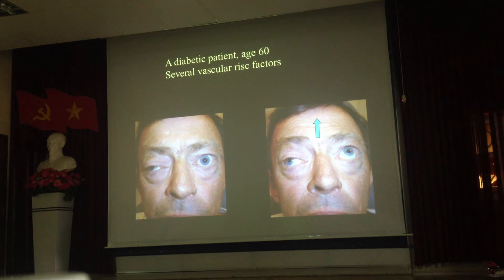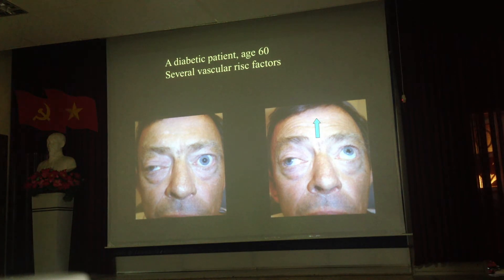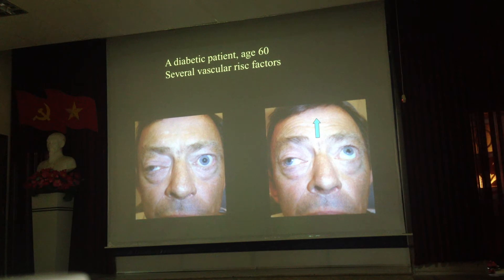How are his pupils? You don't know, do you? How much is the pupil? There is a primary position, right? Is this a primary position? The guy has vascular risk factors. He has diabetes. He has a mental illness.